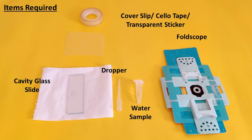For this we will require a foldscope, a dropper, a glass slide with a cavity, a cover slip, cello tape or a transparent sticker wider than the cavity in the glass slide. We will also need a sample of water from any source accessible to you.